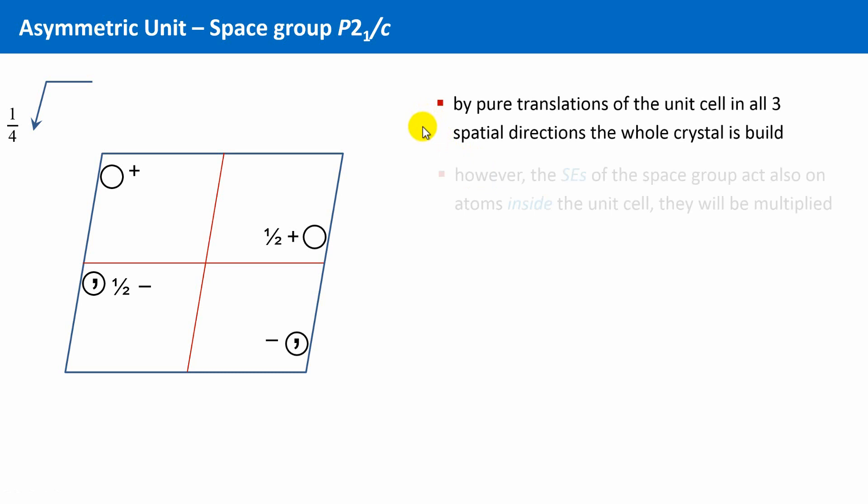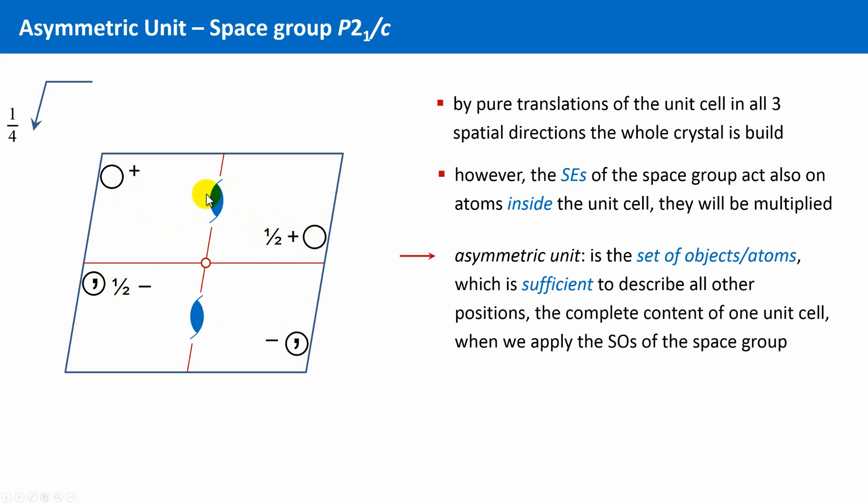However, the symmetry elements of the space group act also on atoms inside the unit cell, and will thereby be multiplied. Let's look at our unit cell. We have a center of inversion here in the middle of the cell. This means, these two objects are symmetry related to each other, as well as these two circles. But we also have these two one-screw axes, and these transform each of these both circles into each other. So, it is absolutely sufficient to specify only one of these four circles to build, or to derive, the whole content of the unit cell. And because this circle does not have to lie exactly at this specific point, it can also lie here, or there, or over here, a whole area is marked as the asymmetric unit.